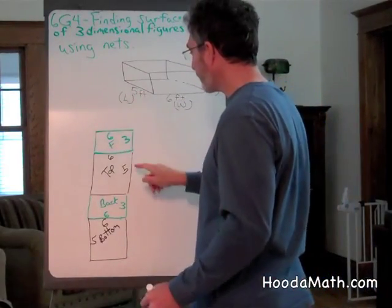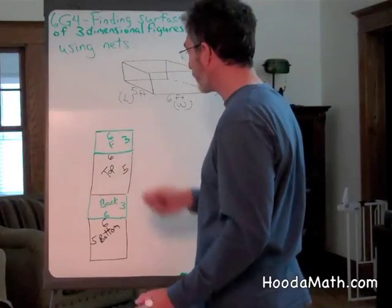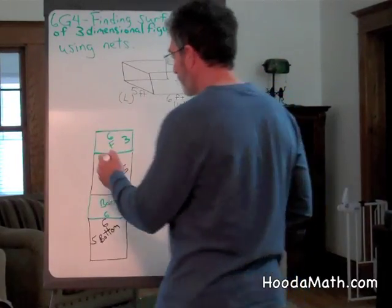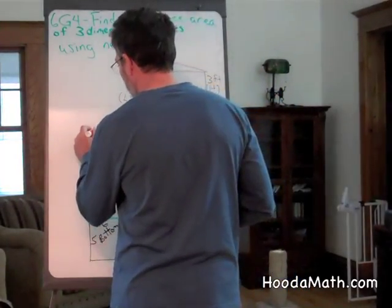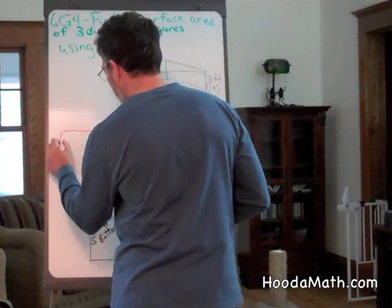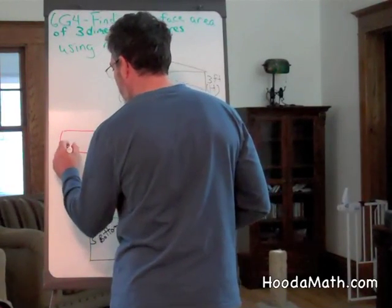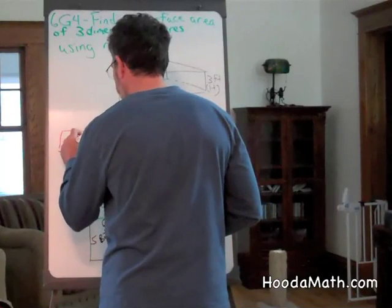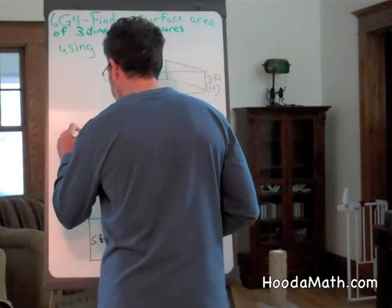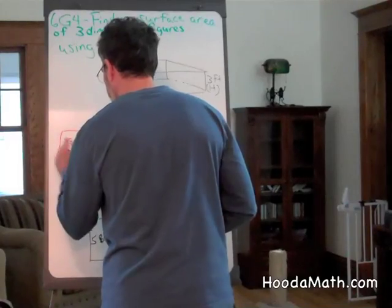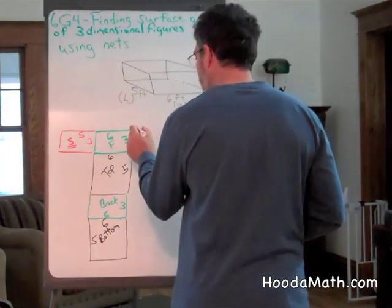So we have to put the five by five or the three by three. If we want to do three by three, then we go three by five. This is a side. This is the other side.